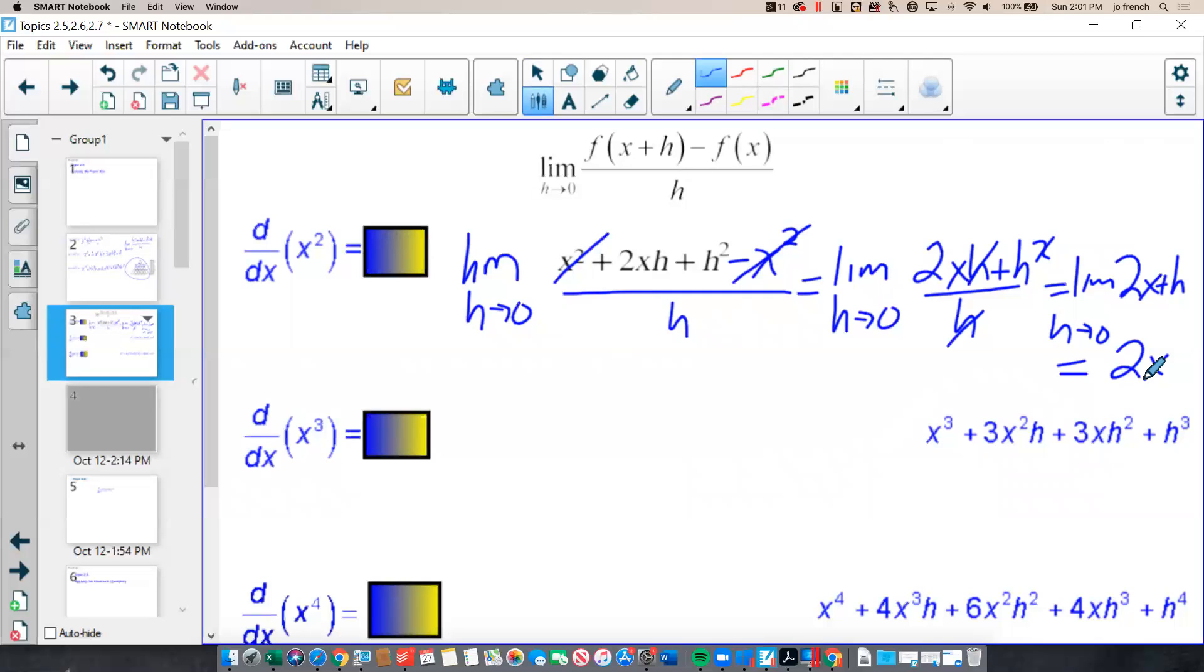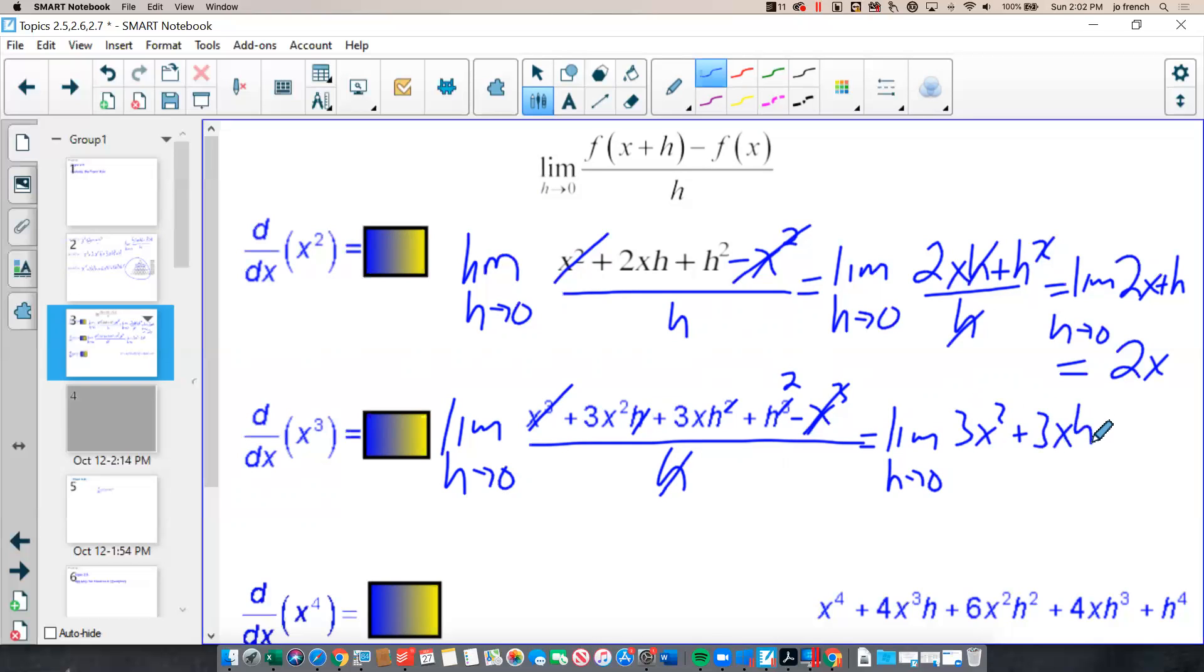If we repeat the process for x cubed, we start with our limit notation. The limit as h approaches 0, of f of x plus h, which is what we determined on the previous slide, minus f of x, so minus x cubed, all over h. And if we do the same simplification and canceling, we have, as h goes to 0, in this case, 3x squared plus 3xh plus h squared. And as h goes to 0, we will see that these two terms disappear, and we're left with 3x squared.